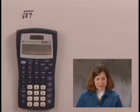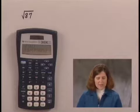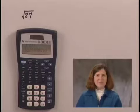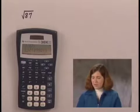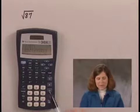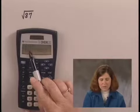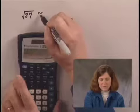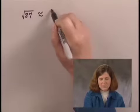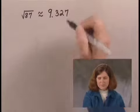The readout on my calculator is 9.327379053. I'm asked to approximate to the nearest thousandth, or to three decimal places, so I round. I have 9.327, so the square root of 87 is approximately 9.327.